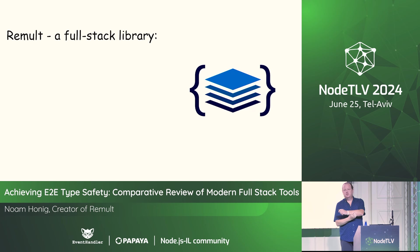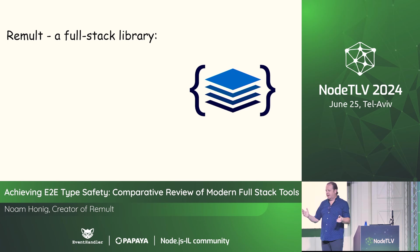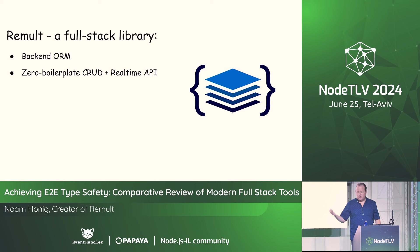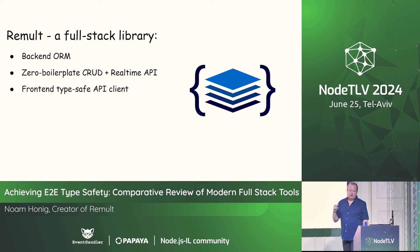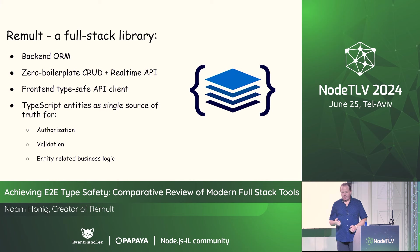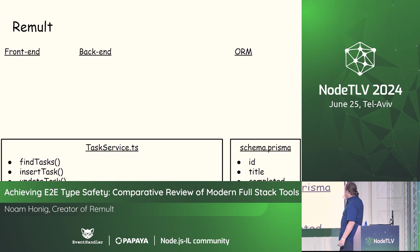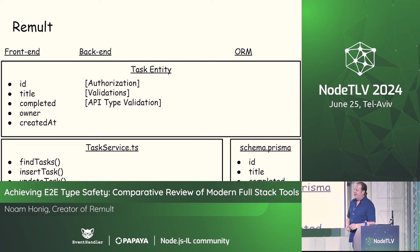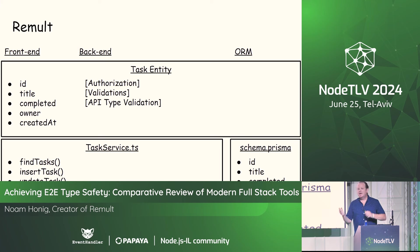Next let's talk about Remult — the answer to everything. Remult is an open source project that Yoni and I started eight years ago, designed to solve these problems and simplify CRUD application development. It includes a backend ORM, zero-boilerplate API routes that are inferred (not generated) from your definition, a front-end type-safe API client, and TypeScript entities as a single source of truth for your validation, authorization, and any entity-related logic.